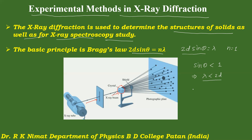Normally, d is of the order of 3 Ångström units. Hence, we have to select X-rays having a wavelength less than 6 Ångström units. X-rays used for diffraction should have an appropriate wavelength to produce the diffraction effect.